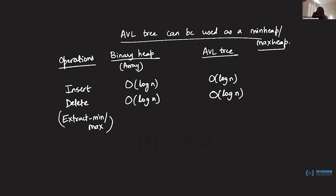Unless you maintain the min or max as an additional variable that you keep updating every time the heap is updated. Since all heap operations can be done by an AVL tree, a binary heap build is O(n) whereas an AVL tree it is O(log n). Search is not something a heap is built for — it's not part of the priority queue abstract data type — so search would be O(n) for a heap but O(log n) for an AVL tree, which is precisely why for search trees we use a different structure.